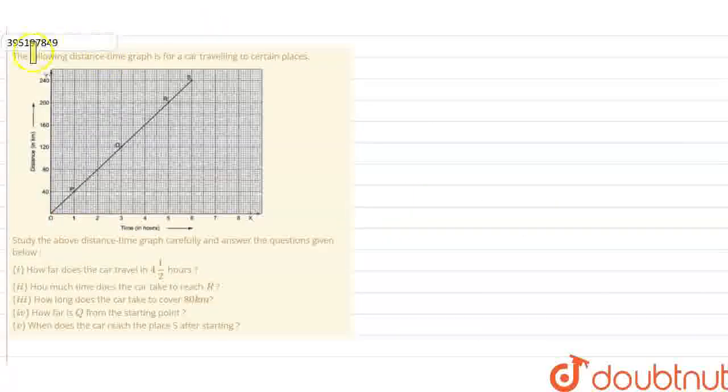What did we say about this question? The following distance-time graph is for a car travelling to certain places. We need to study the above distance-time graph carefully and answer the questions given below.